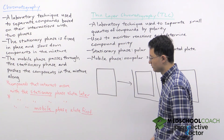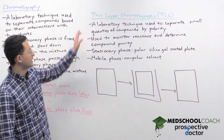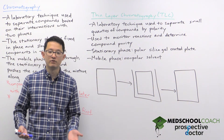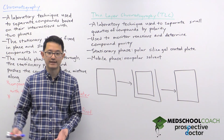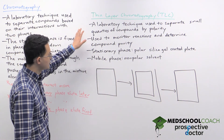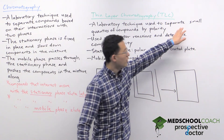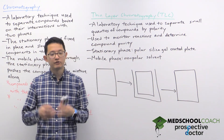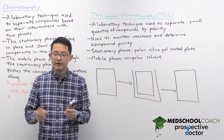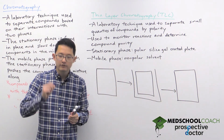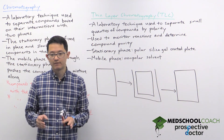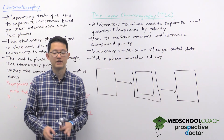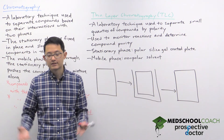Let's take a look at our first example: thin layer chromatography. Most of you probably recall doing TLC on a silica-coated plate where you would only add a very tiny spot of your sample. So this is not used for large-scale separations of compounds, however it still has its uses.